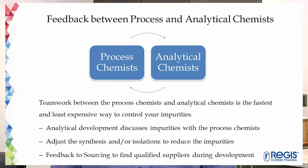The results of impurity identification will also feed back to sourcing to find the appropriate suppliers or qualify suppliers during the development. That means if needed, just by switching the raw material or starting material supplier, we can reduce the impurity level significantly and easily. Overall, managing and identifying impurities early and working together as a team between process chemistry and analytical chemistry will save time and money for your API development project. Thank you for watching.